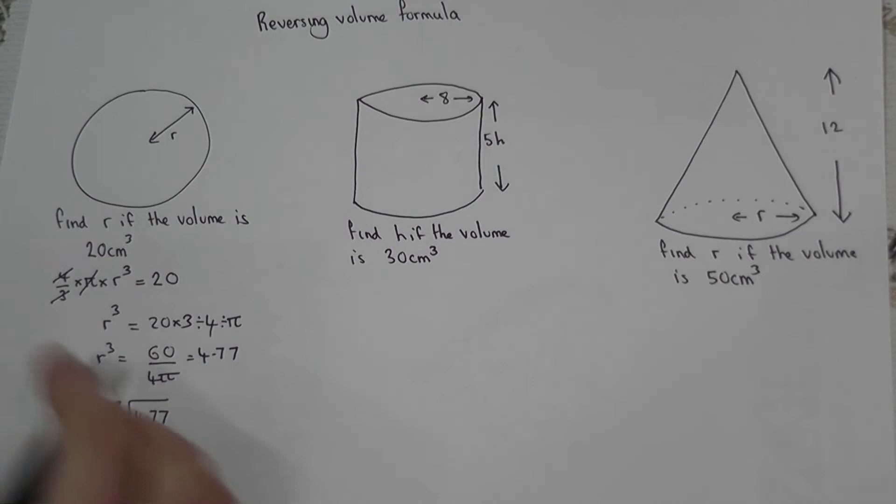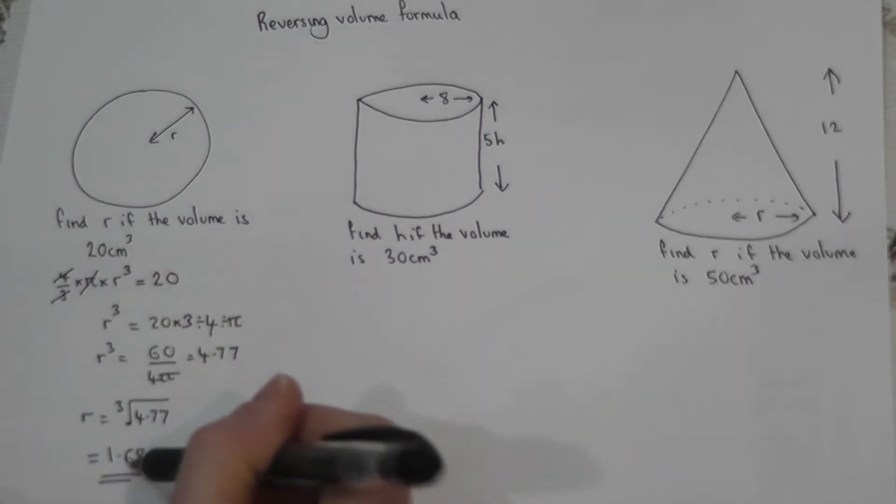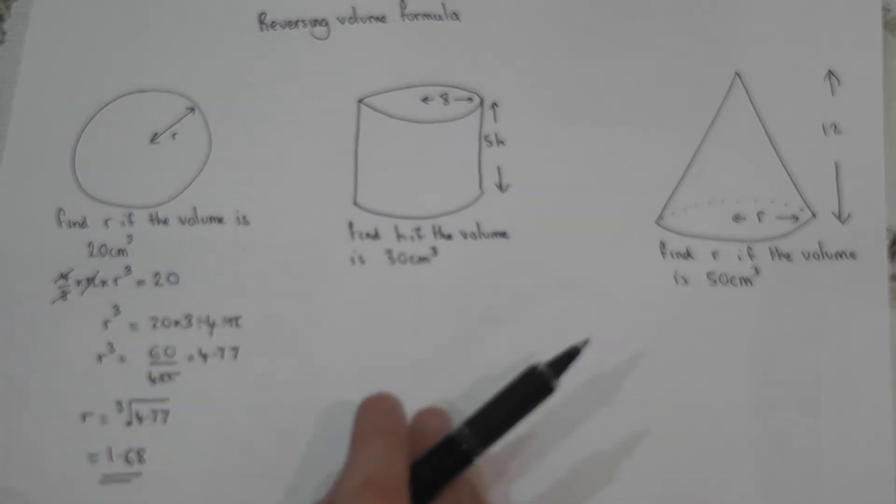So again, to unravel it, I do the reverse: I times by 3, divide by 4, divide by pi, and then finish off with the cube root to get the radius. To check the answer, I could work out 4/3 times pi times 1.68 cubed, and the answer would indeed equal 20 in this case.